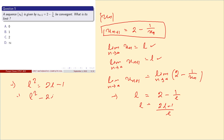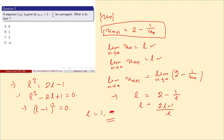Factoring: (L - 1)² = 0, so L = 1. The converging value is L = 1, meaning the limit of the sequence as n tends to infinity is 1.